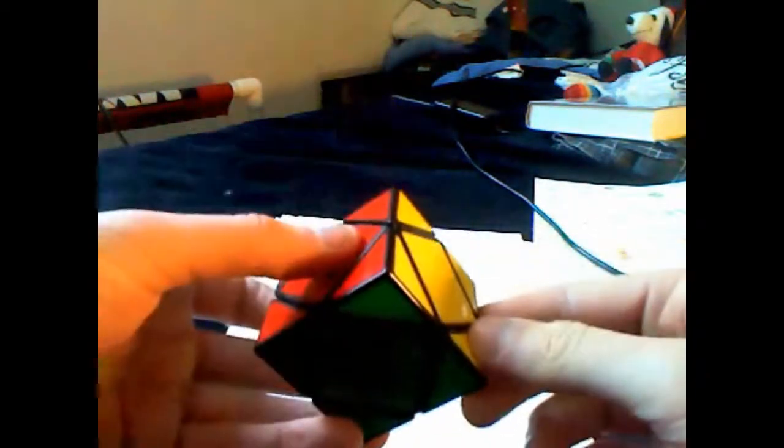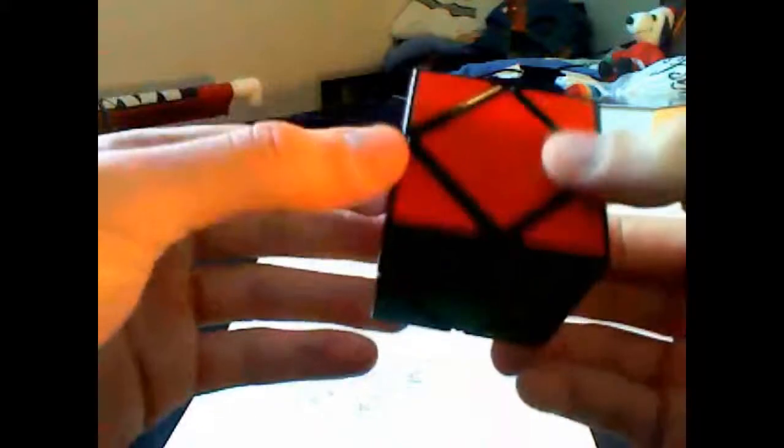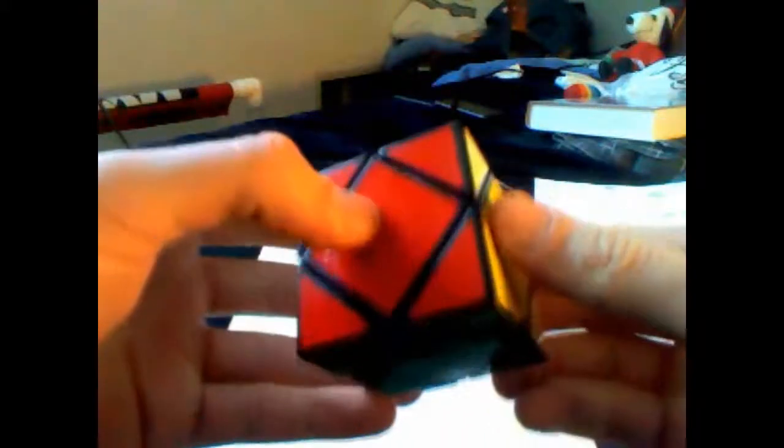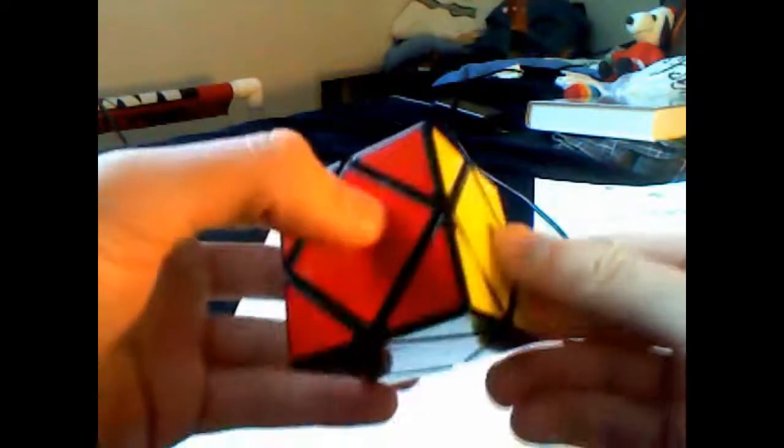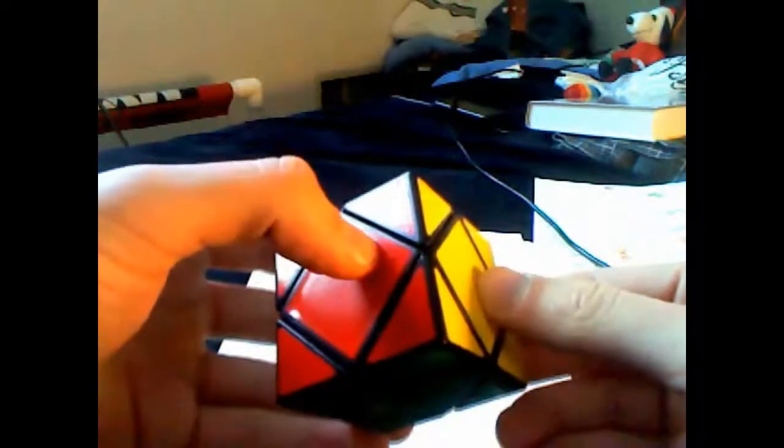The first step is to solve the bottom corners. This is the most intuitive step in solving this cube. It can be done in no more than twelve moves. The first corner can be placed in two or less moves, the second in three or less moves, the third in three or less moves, and the last can be placed in four or less moves.